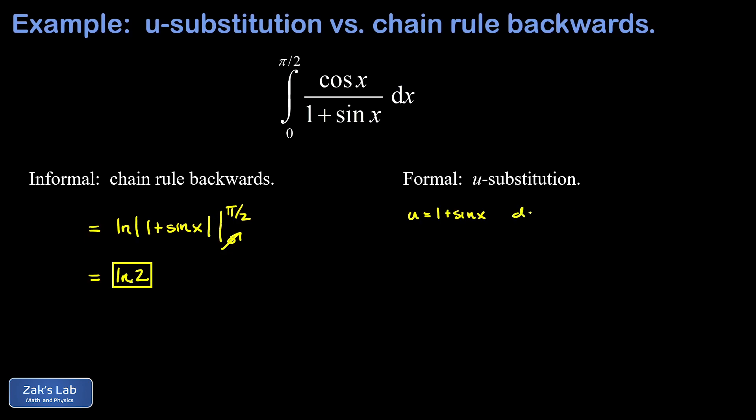So we get du next, which is the derivative of u cosine x, then multiplied by dx, which is exactly what we have in our numerator.